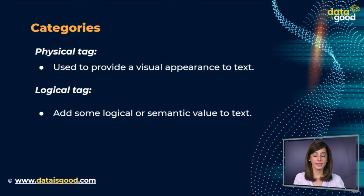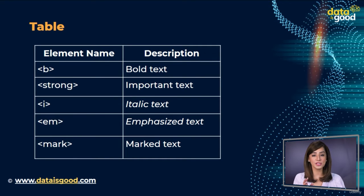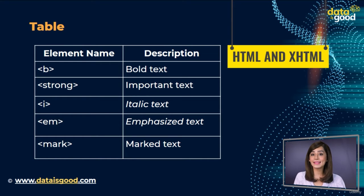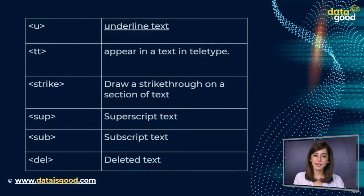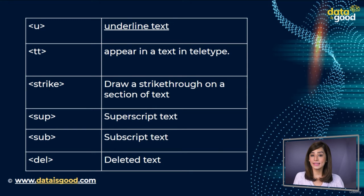This table shows the 14 options available for how text appears in HTML and XHTML: bold text, important text, italic text, emphasized text, marked text, underlined text, superscript text, subscript text, teletype, strikethrough, deleted text, and more.